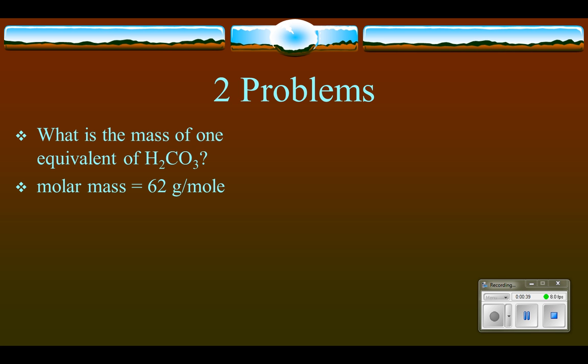And if we want to find the mass of one equivalent, that would be the equivalent mass. Then the equivalent mass is simply taking the molar mass and dividing by the number of hydrogens. So you see there's two hydrogens. 62 grams per mole divided by the number of hydrogens is 31 grams per equivalent.